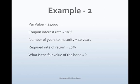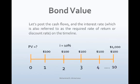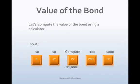Example 2: Par value is $1,000, coupon rate is 10%, maturity is 10 years, and required rate of return is 10%. The coupon payment is $100 per year for 10 years. Enter into the calculator: N=10, I/Y=10, PMT=100, FV=1000. Press CPT and PV (TI) or just PV (HP). The present value is $1,000. When the coupon rate equals the required rate of return, the bond sells at par value.